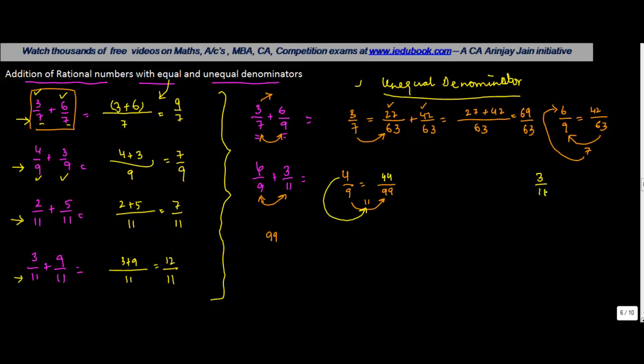For 3/11 to be converted into a rational number with a denominator of 99, 11 goes into 9 to make 99. So we multiply this 3 by 9 and get a 27 over here.